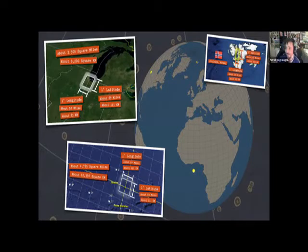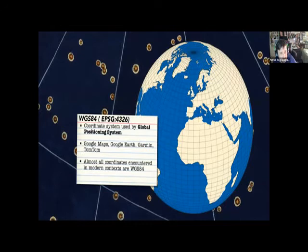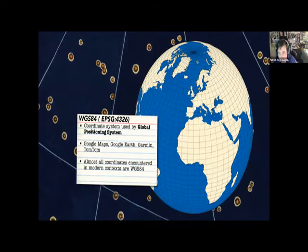We'll be talking mostly about WGS-84 coordinates in this talk. In most modern contexts — Google Maps, Garmin, TomTom — it's going to be WGS-84. But if it's a historical coordinate, it won't be WGS-84, since that was standardized in 1984.